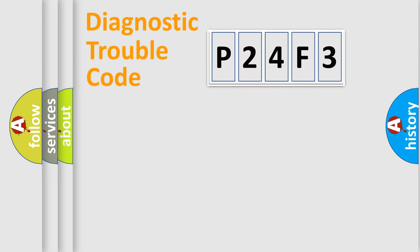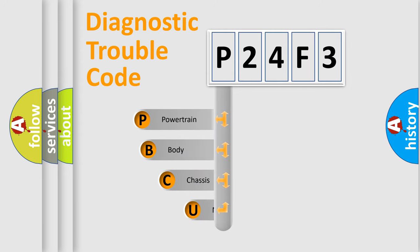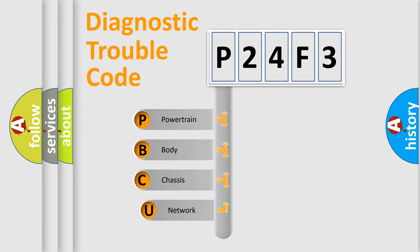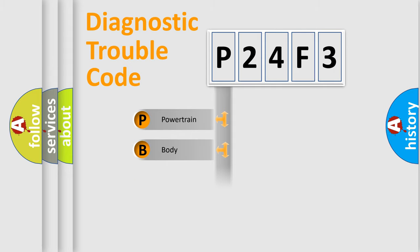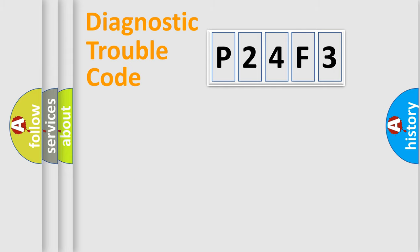Let's do this. First, let's look at the history of diagnostic fault code composition according to the OBD-II protocol, which is unified for all automakers since 2000. We divide the electric system of the automobile into four basic units: Powertrain, Body, Chassis, and Network.